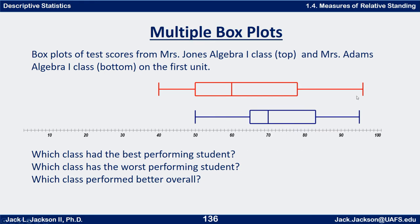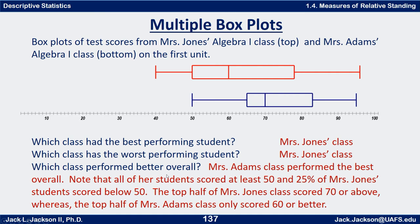The best performing student is the one furthest out — that's the red one, Mrs. Jones' class, at 96. But Mrs. Jones' class also had the worst performing student at 40. Overall, the blue class — Mrs. Adams — is much better. Notice that all of Mrs. Adams' students scored at least 50, while one-fourth of Mrs. Jones' students scored below 50.